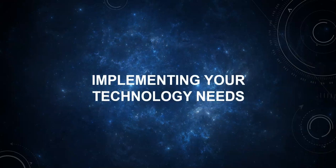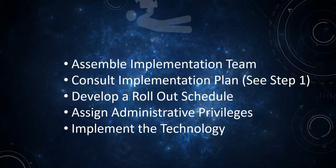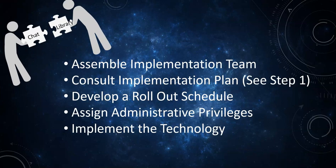The fourth step in the process is implementing the technology needs. The library administrator will assemble an implementation team consisting of the library systems admin and the head of reference services, whose department will be covering the chat service and using the chat application on a daily basis. The team will consult the implementation plan and develop a schedule for rolling out the new chat service. Additionally, the library systems admin will assign administrative or user privileges. Then, the implementation team will move forward with implementing the technology.